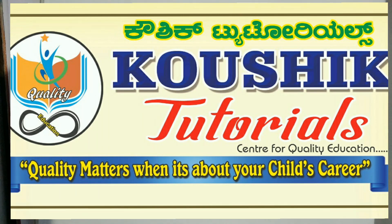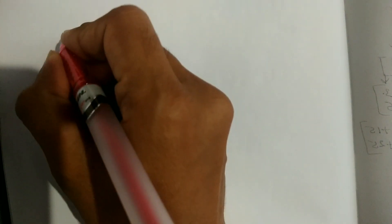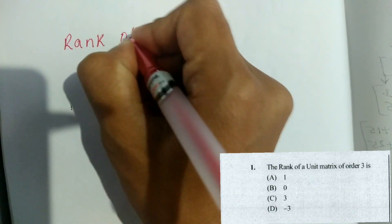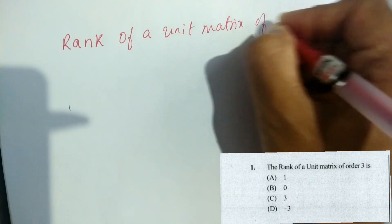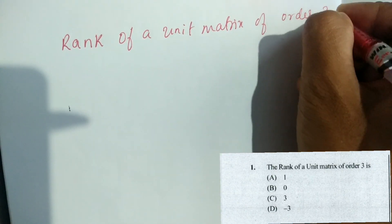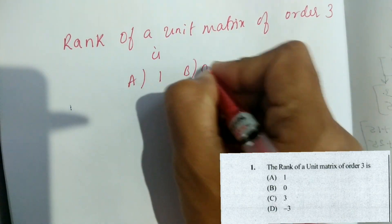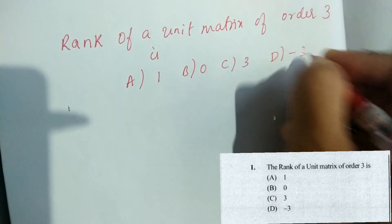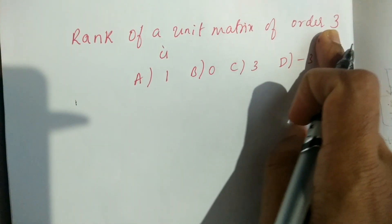Question number 1: Rank of a unit matrix of order 3 is — option A: 1, option B: 0, option C: 3, option D: minus 3.